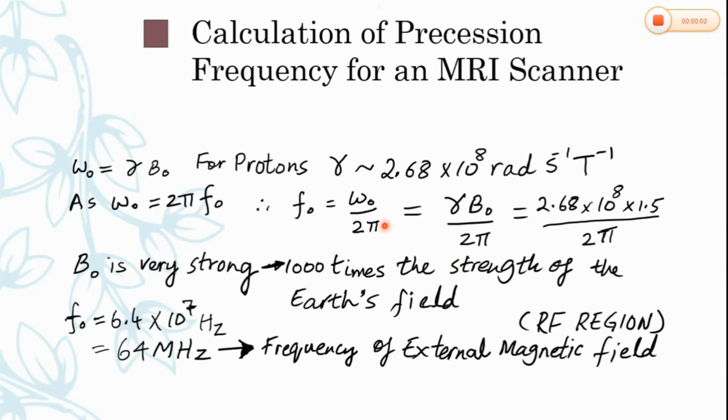Here is the workout. We substitute values of gamma, magnetic flux density, and pi is 22 by 7, which is 3.14. So F naught is 6.4 times 10 to the power 7 hertz, which is 64 megahertz, the frequency of the external magnetic field in the radio frequency region.